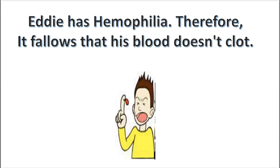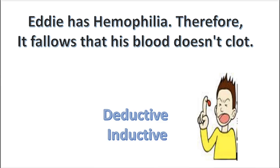Here is another practice problem. Listen to this argument: Eddie has hemophilia. Therefore, it follows that his blood doesn't clot. How is this argument best interpreted — deductive or inductive? Press pause. You're right, it's a deductive argument.